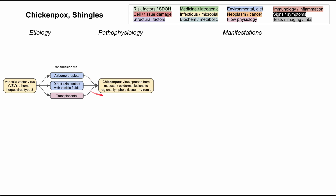When the virus is transmitted for the first time, it causes chickenpox. The virus spreads from the mucosa or epidermal lesions to regional lymphoid tissue, causing a viremia. You're highly contagious during this stage — it's very infectious from around two days before the exanthem onset to five days after the exanthem onset.